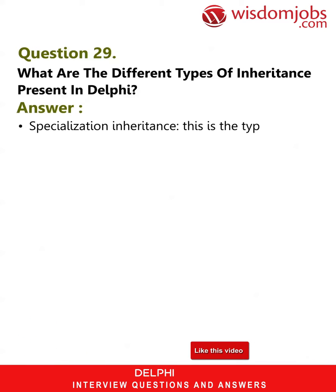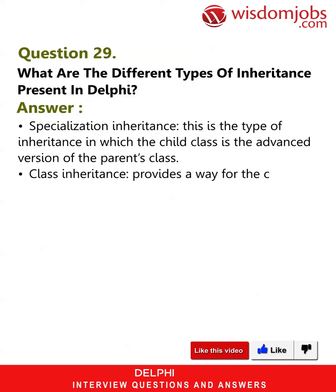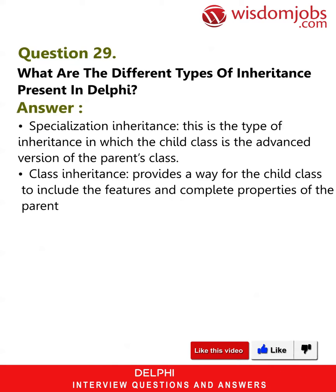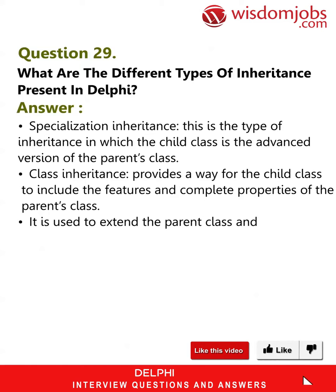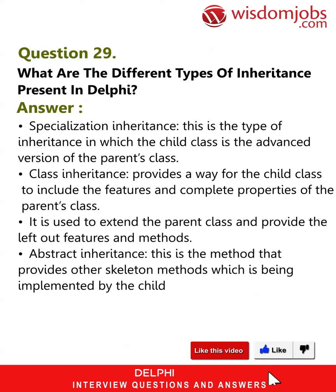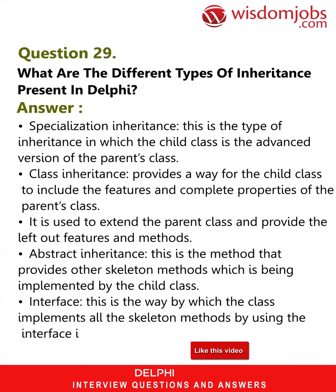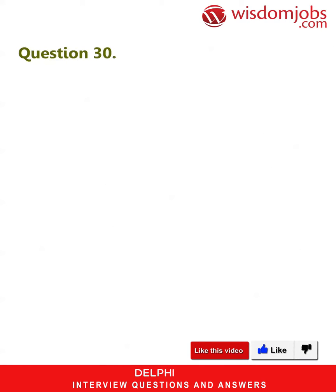Question 29: What are the different types of inheritance present in Delphi? Answer: Specialization inheritance — the child class is the advanced version of the parent class. It provides a way for the child class to include the features and complete properties of the parent class, extending it and providing left-out features and methods. Abstract inheritance — provides skeleton methods which are implemented by the child class. Interface — the way by which a class implements all skeleton methods using the interface itself.